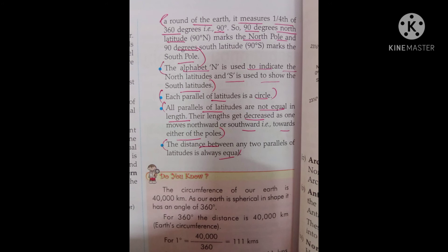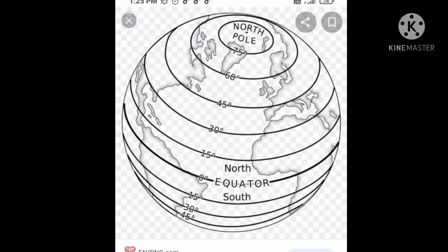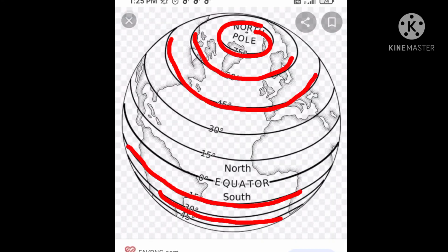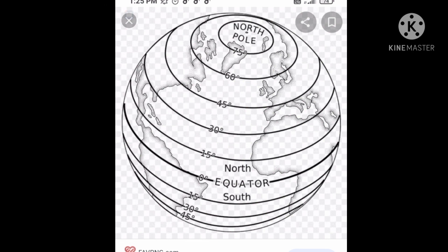Each parallel of latitude is a circle. All parallels of latitude are not of equal length — their length decreases as one moves northward or southward towards either of the poles. However, the distance between any two parallels of latitudes is always equal.